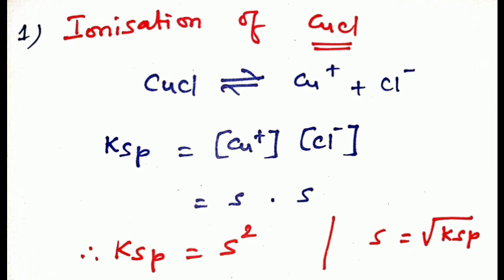Therefore, the solubility product Ksp equals S squared. Rearranging, solubility S equals the square root of Ksp — that is, the square root of the solubility product.